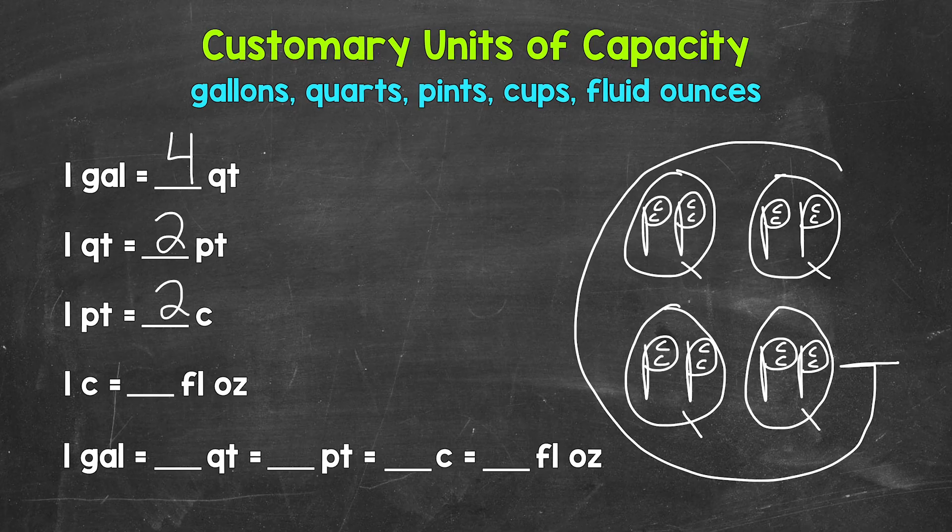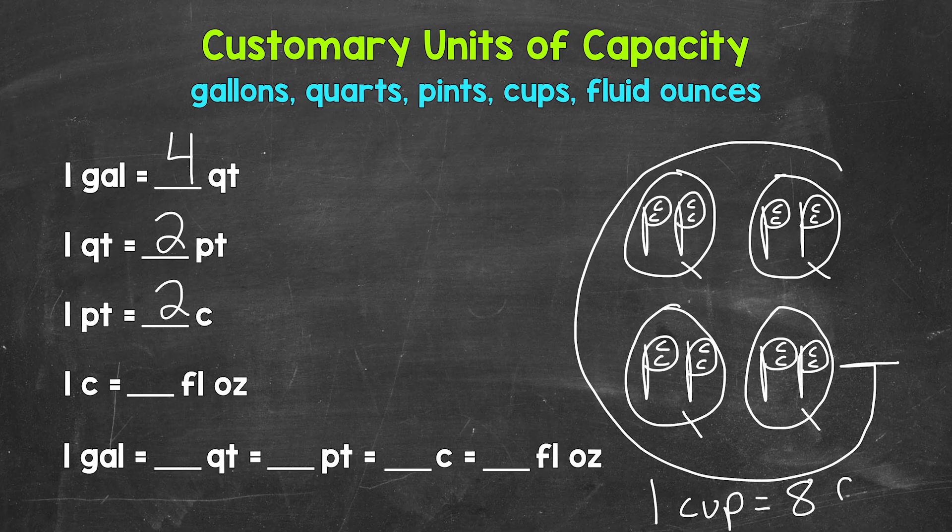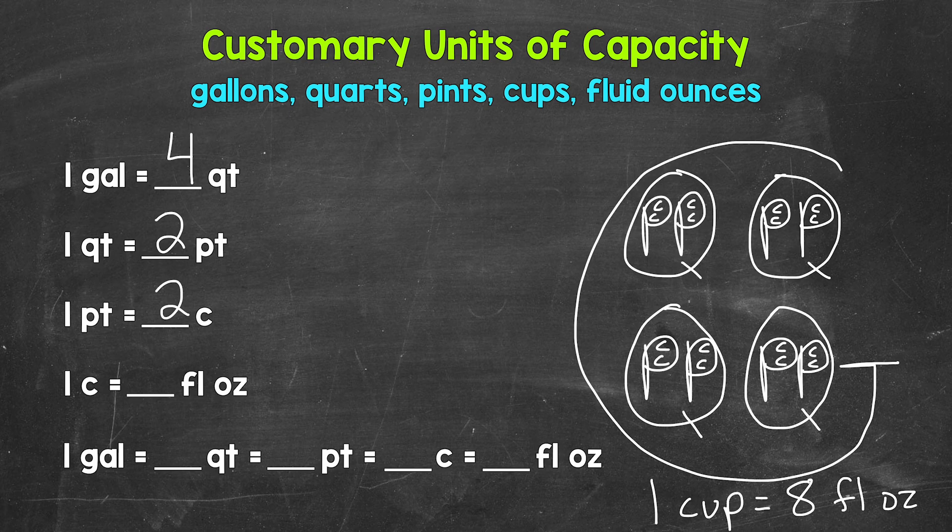Next, we have fluid ounces. One cup equals eight fluid ounces. And we will just write that separately. We're not going to be able to fit eight fluid ounces in each cup here in each of those Cs. Again, one cup equals eight fluid ounces. So over on the left, one cup equals eight fluid ounces.